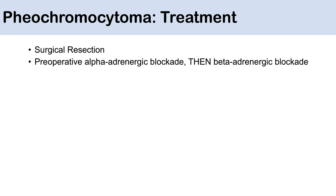Once the pheochromocytoma is localized, treatment involves surgical resection, which is often curative. Before surgery, two steps are required: first, preoperative alpha-adrenergic blockade; then beta-adrenergic blockade — always in that order. Never beta-adrenergic blockade first.